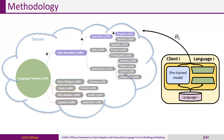Languages are organized into a family tree. The server and client start with identical pre-trained language models and maintain the LoRA parameters for each language tree node. During the federated learning process, the server aggregates the LoRA parameters for a specific language node and its parent nodes, sending the result to the corresponding client. The client updates the parameters based on its local data and sends them back to the server.